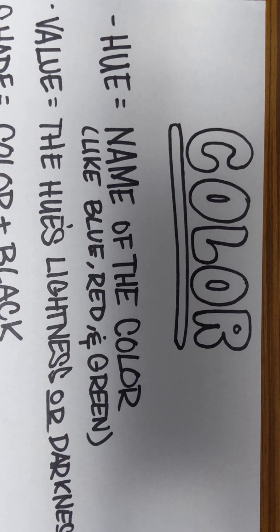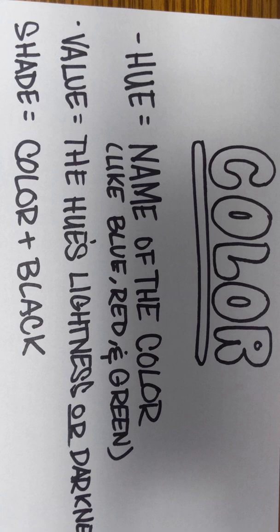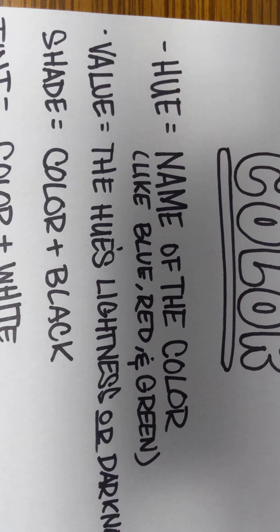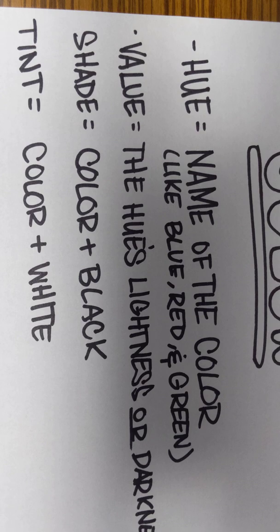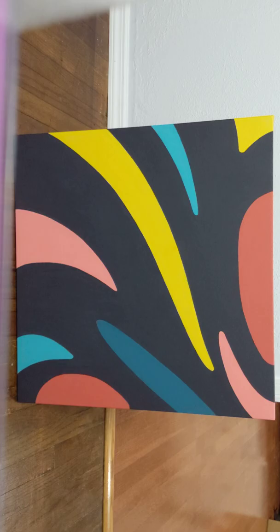Third is the shade, which is the hue or the color plus the color black. And the fourth is the tint, which is the hue or the color mixed with the color white.